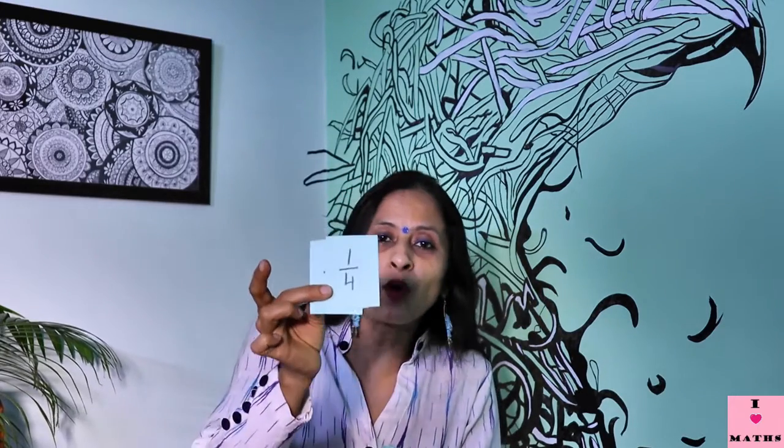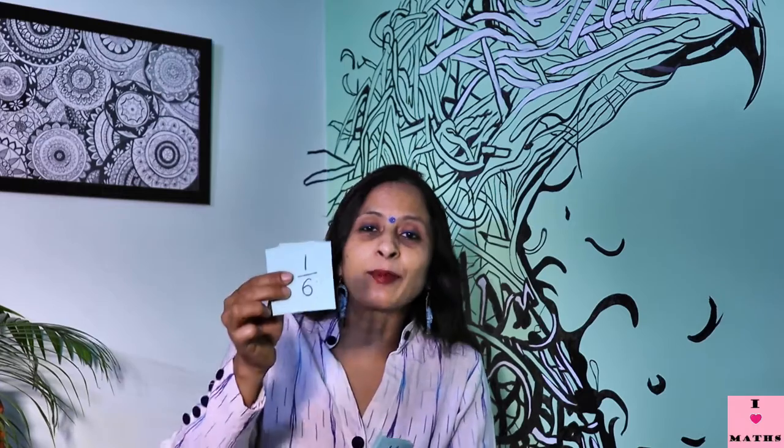After making these circles, we have made these cards. On these cards we have written fractional numbers like 1 upon 2, 1 upon 3, 1 upon 4, 1 upon 6, 1 upon 12, 2 upon 12, 3 upon 12, 4 upon 12, till 11 upon 12. Like this we have made 3 sets.